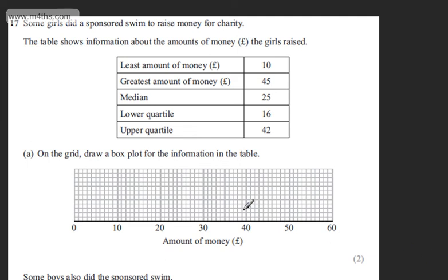This is question number 17. Some girls did a sponsored swim to raise money for charity. The table shows information about the amounts of money in pounds the girls raised. The least amount was £10, the greatest amount was £45, the median value was £25, lower quartile £16, upper quartile £42.